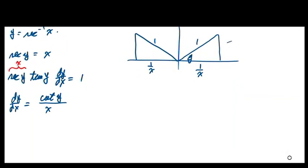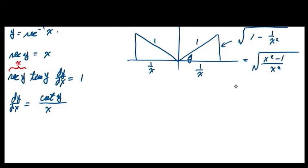We're calculating the remaining side, which is √(1 − 1/x²) = √((x² − 1)/x²) = √(x² − 1) / |x|. Note that square root of x² is the absolute value of x, not just x.